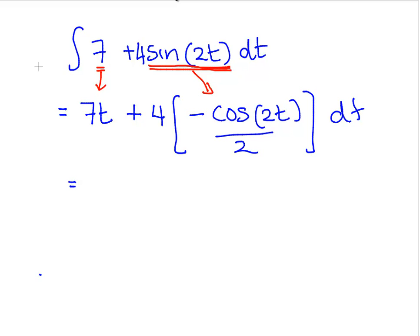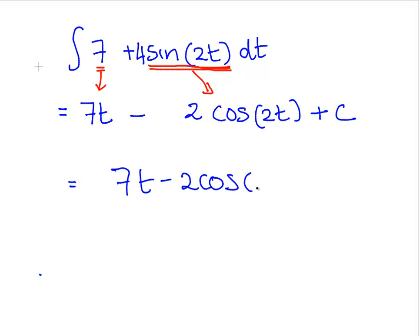So we have plus 4 times minus cos of 2t over 2. So we will take the minus out. So we have plus times minus. So it is minus 4 over that. And divide 4 divided by 2. So that just gives us 2 there. So there we are, 7t minus 2 cos 2t plus C. And that is q of t.